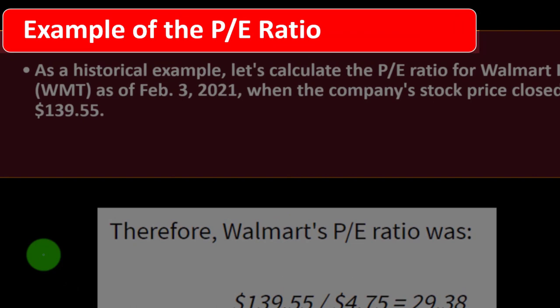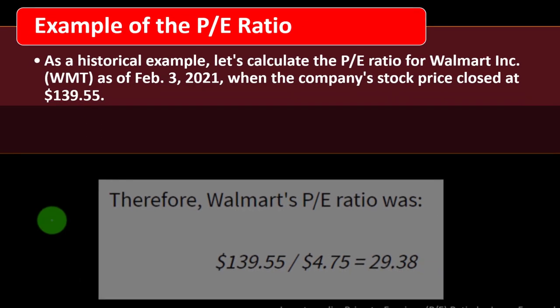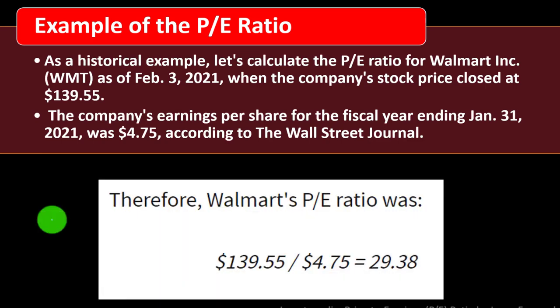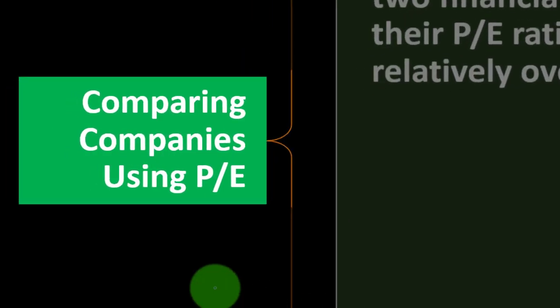As a historical example, let's calculate the P/E ratio for Walmart (WMT) as of February 3rd, 2021, when the stock closed at $139.55. The company's earnings per share for the fiscal year ending January 31st, 2021 was $4.75 according to the Wall Street Journal. Therefore, the P/E ratio is $139.55 divided by $4.75, which equals approximately 29.38.